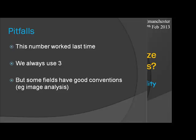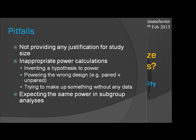We always use three as a sample size — that's a very common statement from biologists. There is a role for convention and experience, and in some fields like image analysis it's so complicated that you couldn't possibly do a sensible power calculation. You would say 'similar sorts of studies have used 10 patients and they've found useful results.' There are some fields where that kind of convention is useful. But not providing any justification, or providing inappropriate justification — just inventing a hypothesis and assigning power — that's something you see quite a lot of people trying to do. If there isn't a justification, there isn't one.